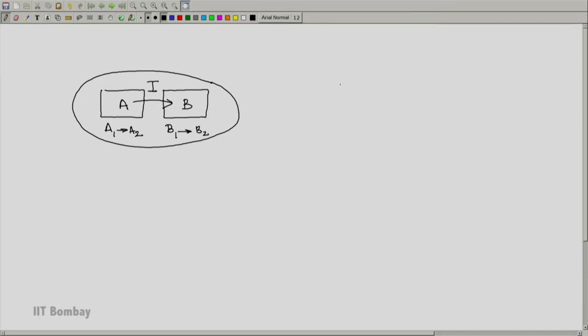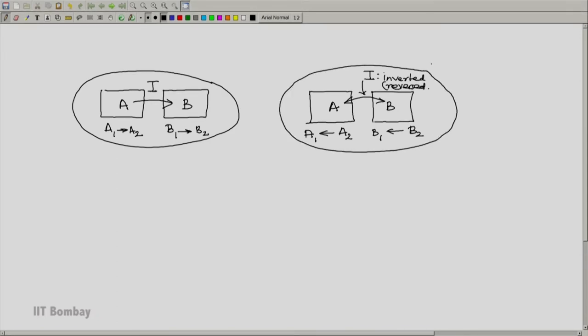Now, consider a process involving the same two systems, where we have A and we have B. But the process is such that A now goes from A2 to A1, back to A1. B goes from B2 back to B1. And all interactions are also inverted, inverted or reversed. Sort of a mirror image process in time or a reverse process.